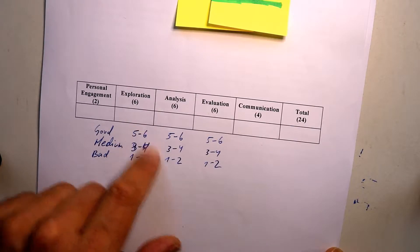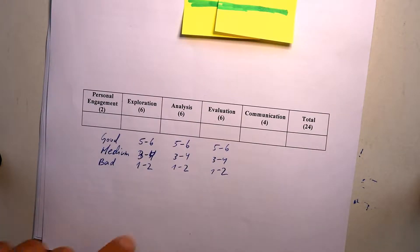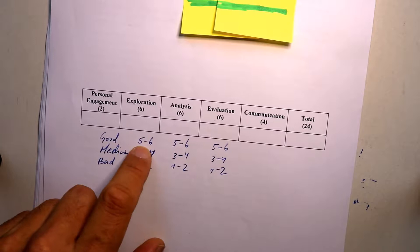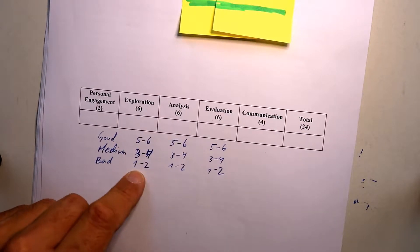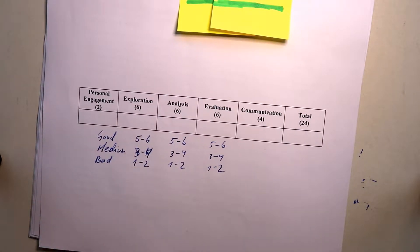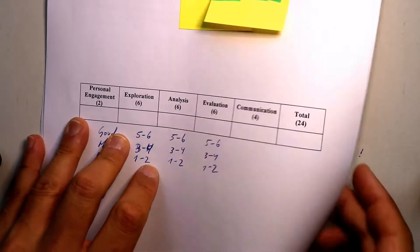Okay, so I put the point range here. So if it's a good one I'll give between five and six points, and if it's bad only one to two points, zero points if it's completely missing or if it's so bad that it doesn't deserve any points.